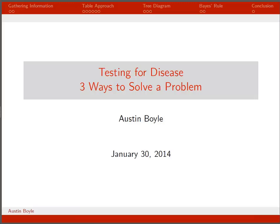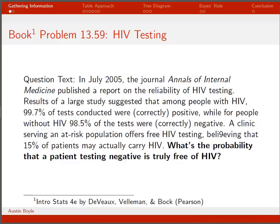Today we are going to talk about testing for disease and three separate ways to solve a problem. We covered this problem in the textbook on homework number two. You can read the question text from problem 13.59 — the question we're really trying to answer is this last sentence in bold: what's the probability that a patient testing negative is truly free of HIV?